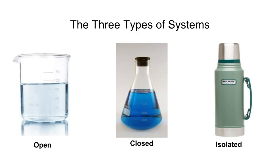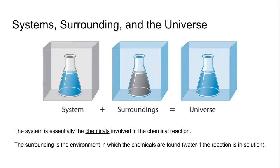So that's something to keep in mind. Now when we talk about systems and surroundings of chemical reactions and thermochemistry, we want to make sure that we know what we're talking about in terms of the system and the surroundings. So the system is essentially the chemicals involved in the chemical reaction.